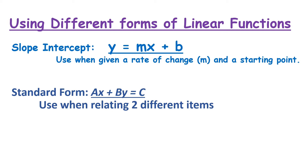The first one is the slope-intercept form: y = mx + b. M is your slope or your rate of change — anytime you see words like 'per' or 'every,' that is your rate of change. B is your initial starting point or your y-intercept. Whenever you see those items in a verbal description, we're going to use slope-intercept form.